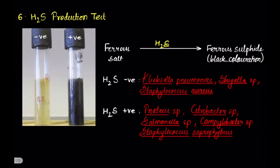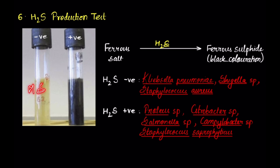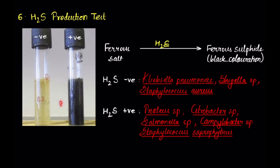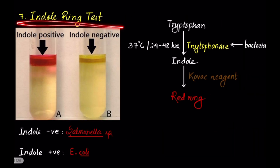Next is the hydrogen sulfide production test. The reagent used is an iron salt — sometimes ferrous, sometimes ferric. If the bacteria produces hydrogen sulfide gas, the salt gets converted to its sulfide, which appears as black coloration. Where no hydrogen sulfide gas is produced, no black coloration is seen. Where hydrogen sulfide gas is produced, black coloration is seen. Hydrogen sulfide positive bacteria brings about black coloration of the reagent, while hydrogen sulfide negative bacteria does not.